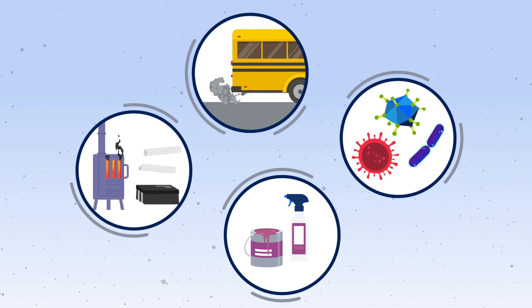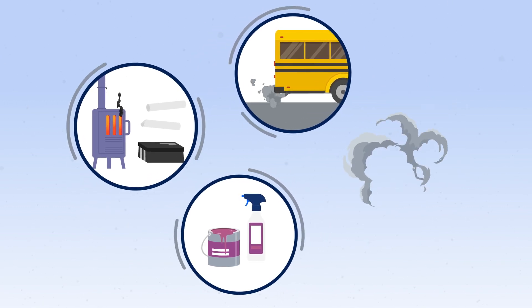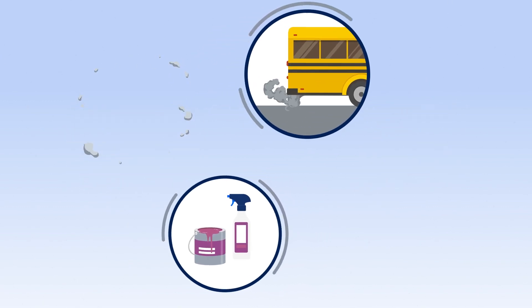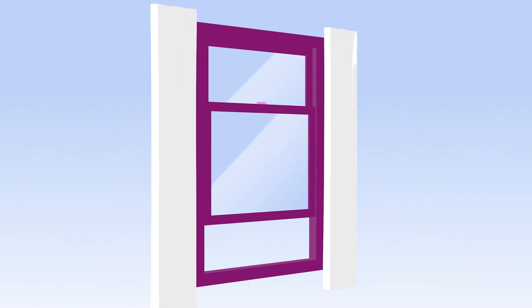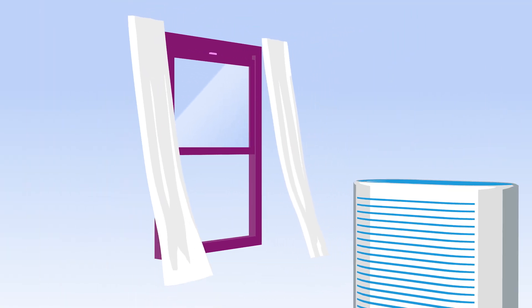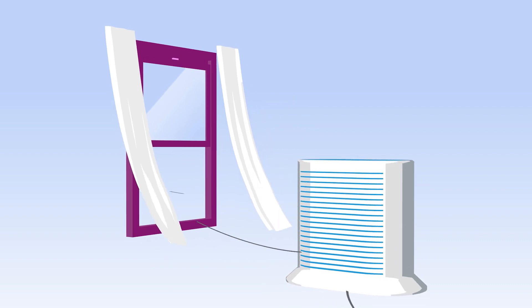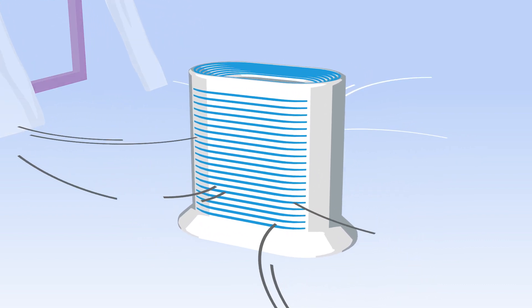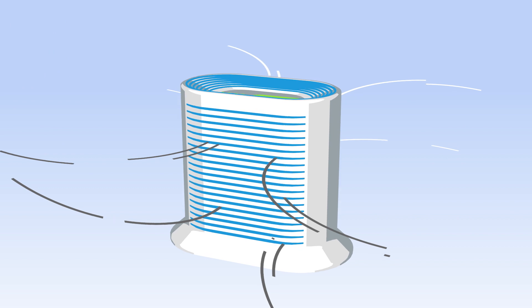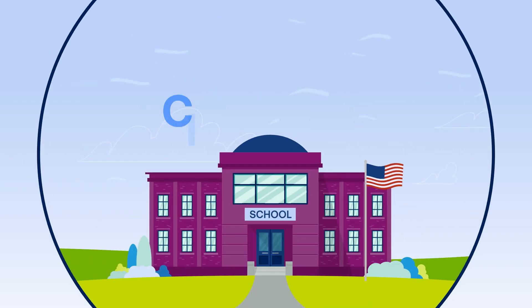To improve the indoor air quality in your school, remove the source of the air pollution if you can — prevention is best. Air out your classroom by opening doors and windows. Filter the air with an air cleaner. Air cleaners take in the room's air and capture particles, viruses, and many chemicals, then release clean air back into the room.